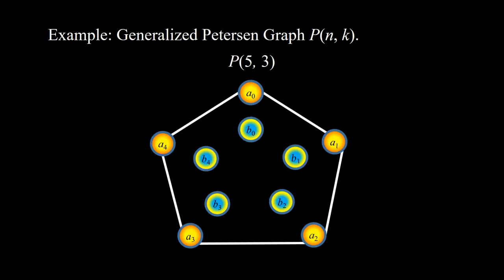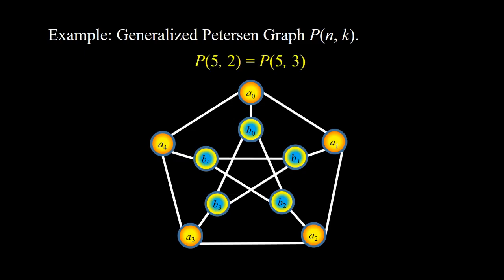Note that K must be less than n/2, so in this case K is at most 2. Just to give you an idea, let's see K equal to 3. Here we have cycle C5 and the B vertices and the AB edges. Because K is 3: B0 and B3 are adjacent, B1 and B4 are adjacent, B2 and B0 are adjacent, B3 and B1 are adjacent, and B4 and B2 are adjacent. We see that P(5,3) is exactly the same as P(5,2) — it is the classical Petersen graph.